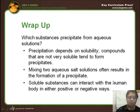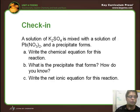For the check-in: a solution of K2SO4 is mixed with a solution of Pb(NO3)2, and a precipitate forms. Write the chemical equation for this reaction. What is the precipitate that forms? How do you know? Write the net ionic equation for this reaction.